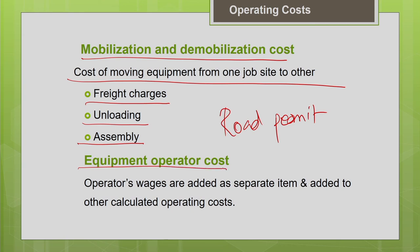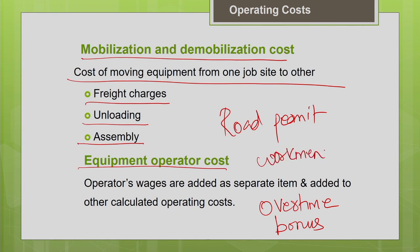Equipment operator cost includes the normal hourly wages of the operator plus all benefits — overtime charges, bonuses, and workman compensation insurance premium paid by the employer on behalf of the worker. All these are included in the operator cost and calculated as a corresponding hourly figure.